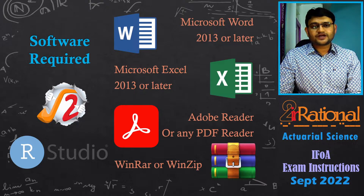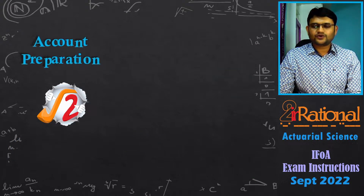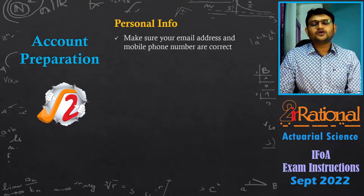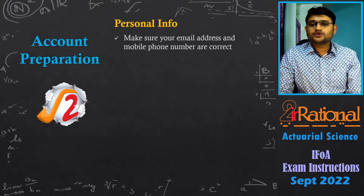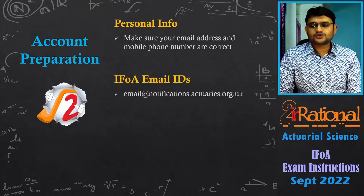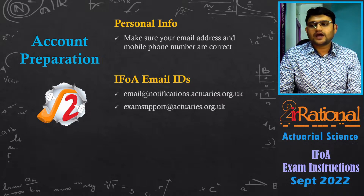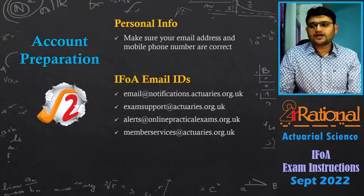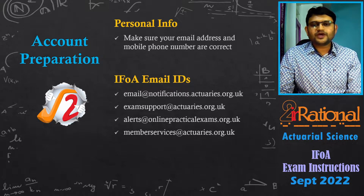After sorting all the required software, let's go through the account preparation. Make sure that your email address as well as mobile number mentioned in your IFOA account are correct, because they will be contacting you through email and you will require your phone details for entering the examination. You may receive email correspondence through these four email addresses: notifications@actuaries.org.uk, examsupport@actuaries.org.uk, alerts@onlinepracticalexams.org.uk, or memberservices@actuaries.org.uk. Make sure none of these emails go to your spam or junk mail.